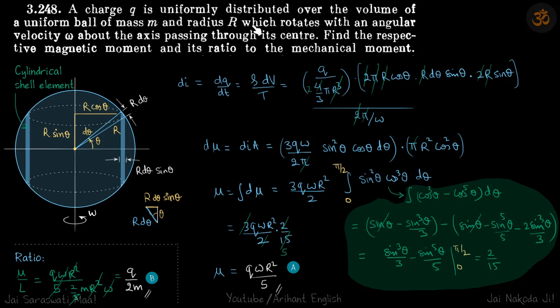So in this question, it's a solid sphere and a charge Q is uniformly distributed on it. And this is rotating, this sphere is rotating with omega. We are supposed to find the magnetic moment due to this whole sphere and its ratio to the mechanical moment.